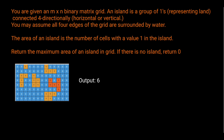From this example grid, we use 0 to represent water and 1 to represent land. The answer we're looking for is 6. This first island has an area of 1 because there's only one tile. This next island has an area of 4. This one also has an area of 4. This one has an area of 5. But this one actually has an area of 6, and this one down here has an area of 5. So the greatest area is 6.